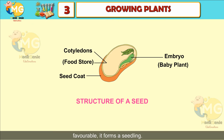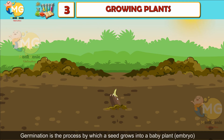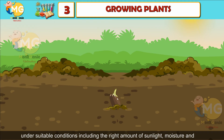Number three: embryo. The embryo is the baby plant inside the seed. When conditions are favorable, it forms a seedling.